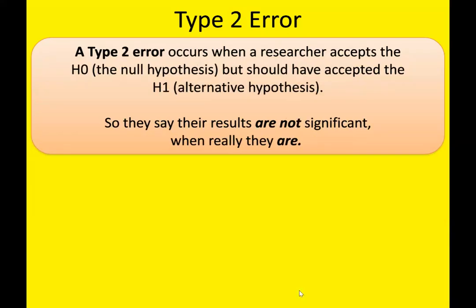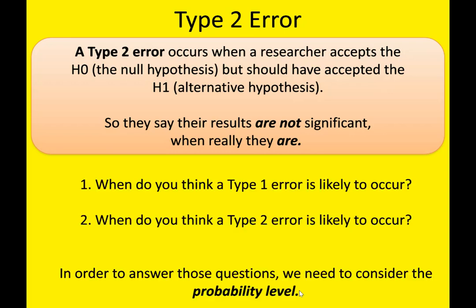A Type 2 error is the opposite. It occurs when a researcher accepts the H0, the null hypothesis, but should have accepted the H1, the alternative hypothesis. So they say the results are not significant when actually they are significant. Again, this is a mistake — they've done their investigation and found no significant difference or correlation in their data set, but actually there was something going on.